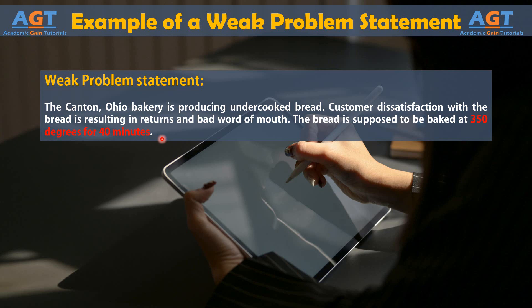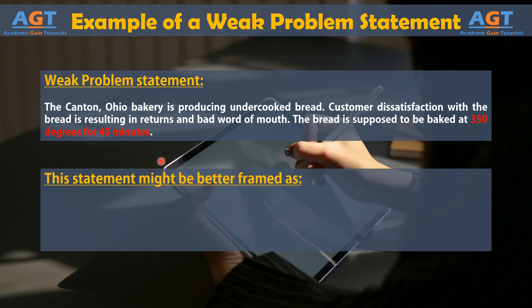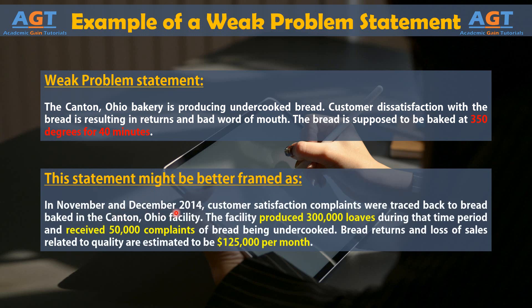This statement might be better framed as: In November and December 2014, customer satisfaction complaints were traced back to bread baked in the Canton, Ohio facility. The facility produced 300,000 loaves during that time period and received 50,000 complaints of bread being undercooked. Bread returns and loss of sales related to quality are estimated to be $125,000 per month. Then it would become a strong problem statement.